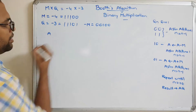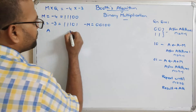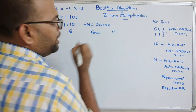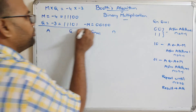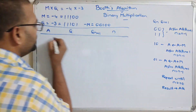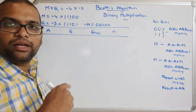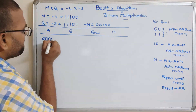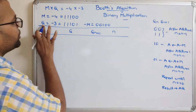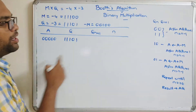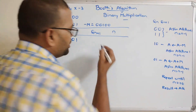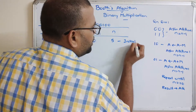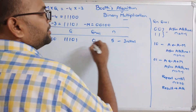Now let's set up the table with the accumulator, multiplier Q, Qn+1, and n. We are representing each number in five bits, so initialize the accumulator A with five zeros. Q (the multiplier) is 11101. Qn+1 is an additional bit, initialized to zero. N equals five. This is the initial position.